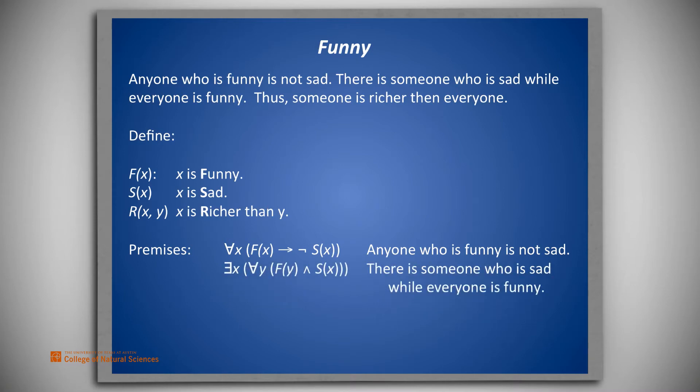And, there exists an x such that for all y, f of y, and s of x. That is, there is someone who is sad while everyone is funny.